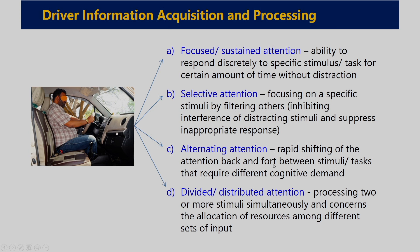Alternating attention is the rapid shifting of attention back and forth between stimuli or tasks that require different cognitive demand. For example, while a co-passenger is talking with the driver, the driver performs both tasks — talking with the co-passenger and looking at the road — rapidly shifting attention between these two tasks. This is an example of alternating attention.